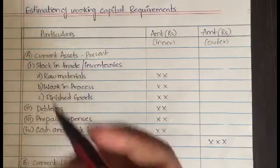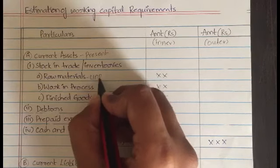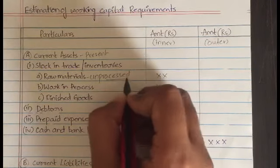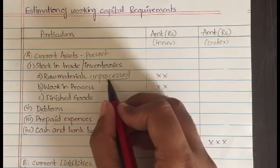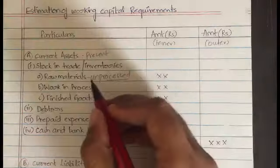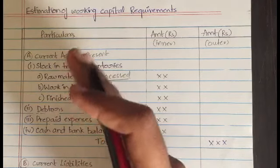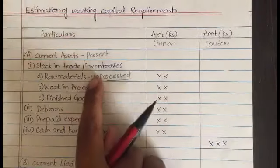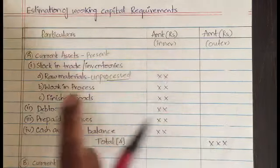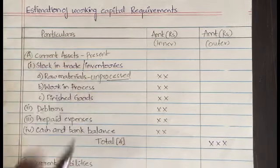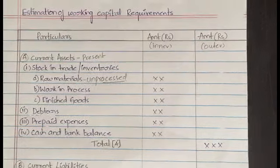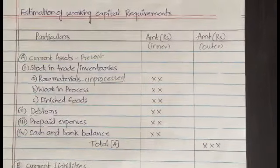In stock in trade we have some subcategories. The first one is raw material — simply, unprocessed purchases that we make. We will be using these unprocessed things in manufacturing or in producing some good. They are called as raw material. Next is work in process — raw material which is being processed, which is under process, is called as work in process.